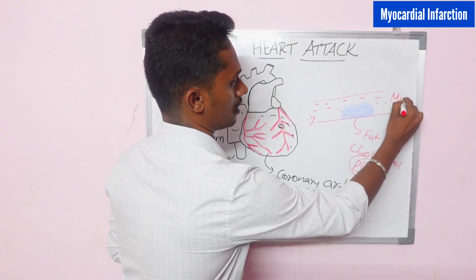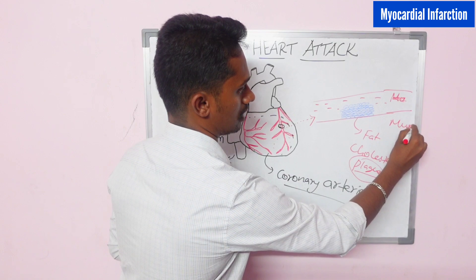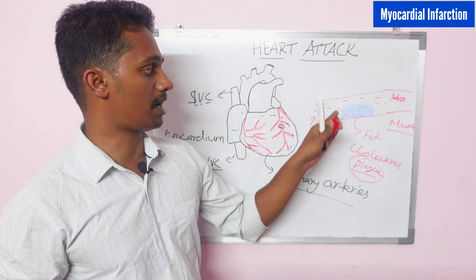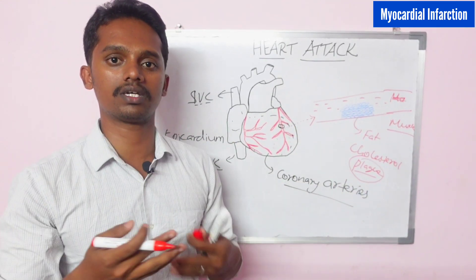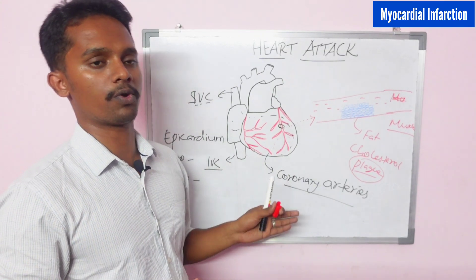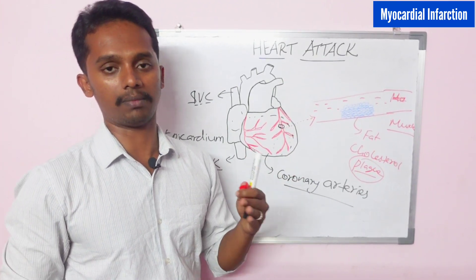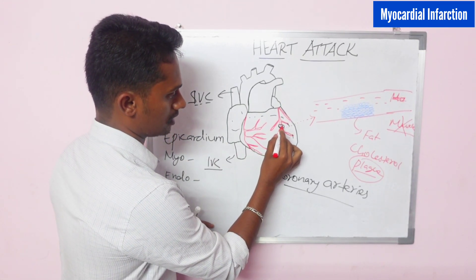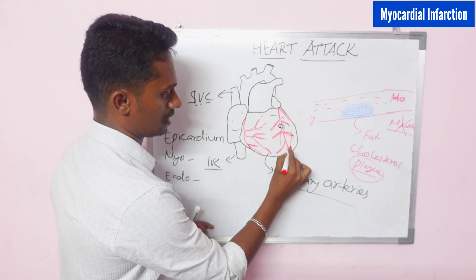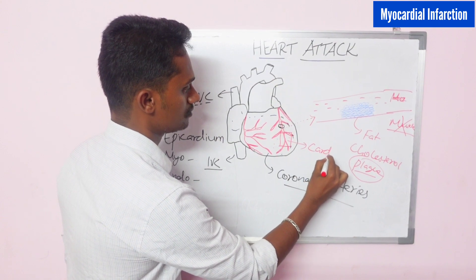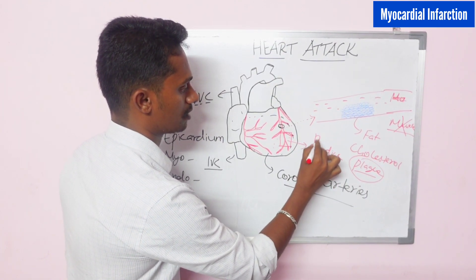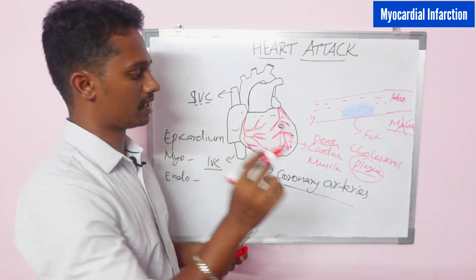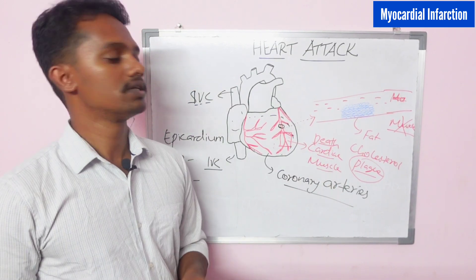There is a muscle here — this is a blood vessel. If the blood supply is cut off, it will be unable to deliver oxygen. The muscles of the heart, that is the myocardium, also need oxygen. If there is no oxygen, the muscles will die. If the blood supply to the cardiac muscle is blocked, that cardiac muscle undergoes death. This death is called infarction — myocardial infarction.